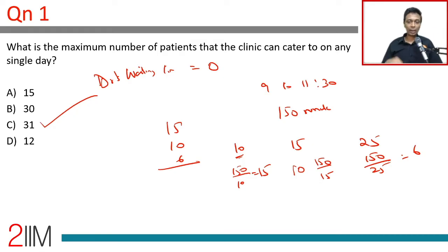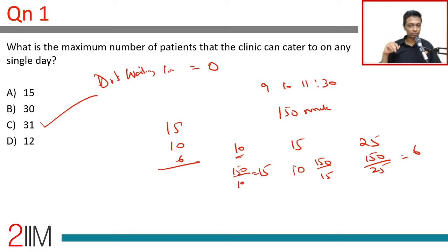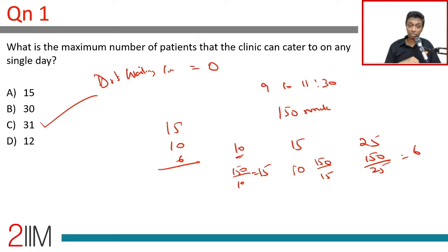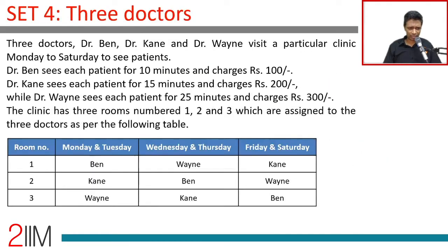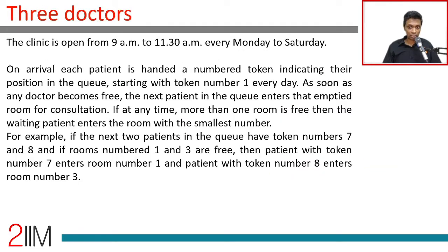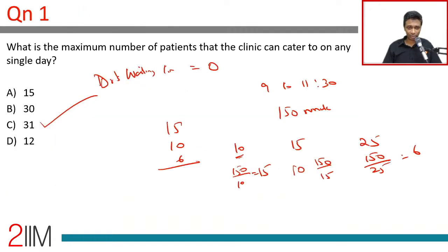Basically, the doctors are maxed out — there is not a single minute where a doctor is not seeing a patient. There are tons of patients; they are all there at 8:50. The moment the clinic opens, the doctors just keep seeing patients — they guzzle patients down. Every time a doctor is done with a patient, a new patient is waiting to come in. So they will see 15, 10 and 6 patients respectively, totalling 31. Remember: Ben takes 10 minutes and charges 100, Cain takes 15 minutes and charges 200, Wayne takes 25 minutes and charges 300.